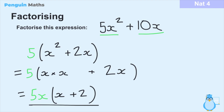To check our answer, we multiply what's outside the bracket by what's inside and confirm we get the original expression. Multiplying 5x by x gives us 5x squared, and multiplying 5x by 2 gives us 10x. So the factorised expression 5x(x + 2) is correct — confirmed by multiplying out the brackets and getting 5x squared plus 10x.